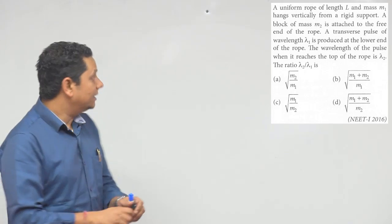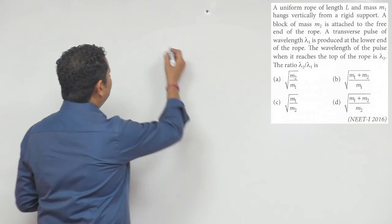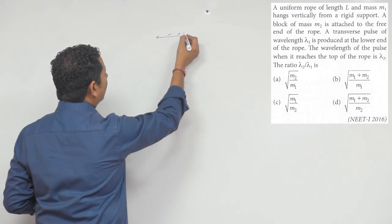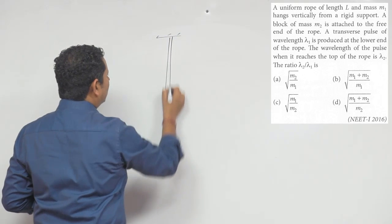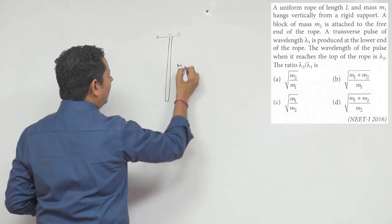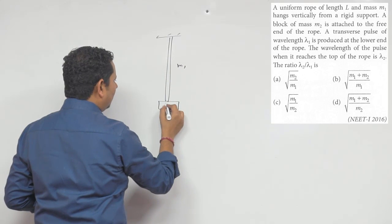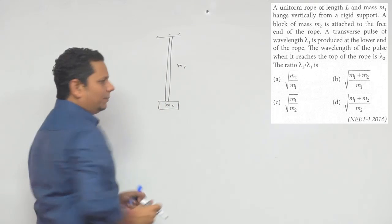We need to clarify our situation. This is a rope. This rope has mass M1, and at the end we have placed M2 here.